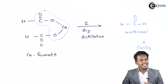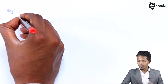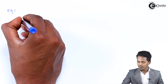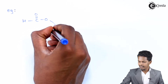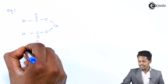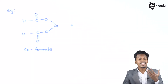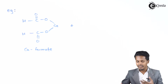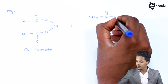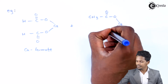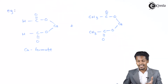So now let us discuss about an example. We have to consider calcium formate and react it with calcium carboxylate. For example, I am considering CH₃–C(=O)–O with calcium — that is the calcium salt of acetic acid, also known as calcium acetate — and suppose it undergoes a dry distillation process.